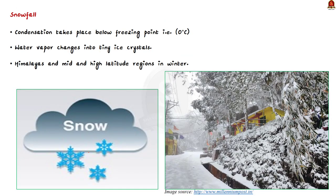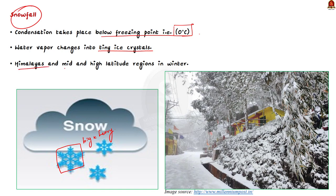The second form is snowfall. When condensation takes place below the freezing point, that is 0 degrees Celsius, water vapor changes into tiny ice crystals. These tiny ice crystals grow in size and form ice flakes which become big and heavy and start falling to the ground. This form of precipitation is called snowfall and it is very common in Himalayan areas and mid and high latitude regions in winter.